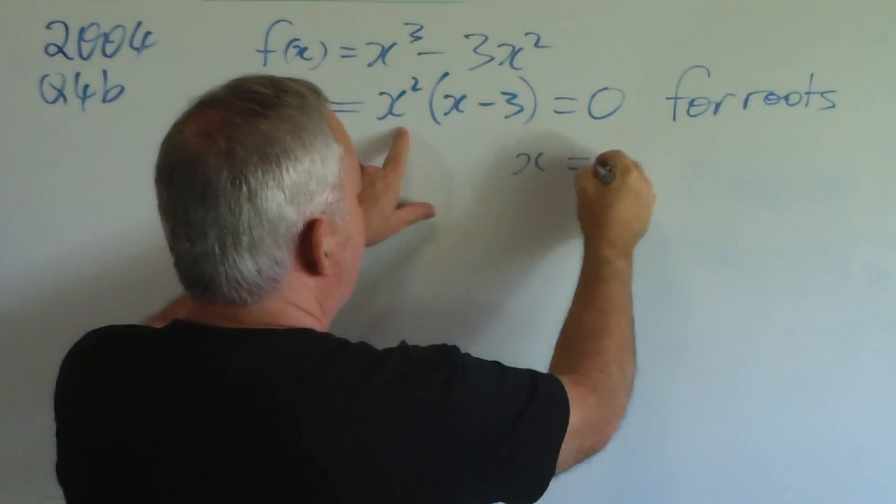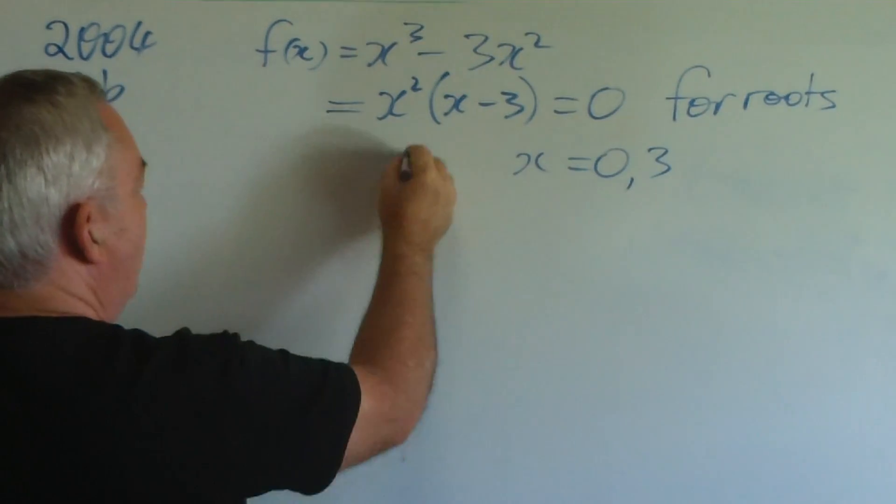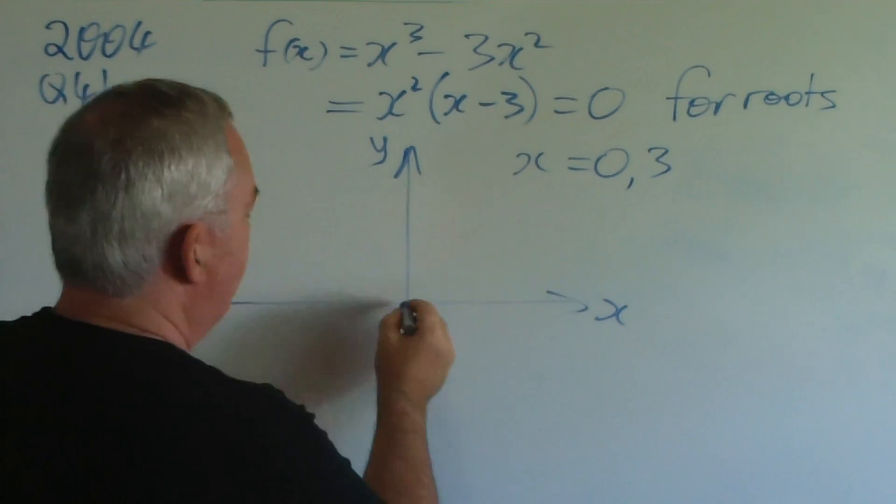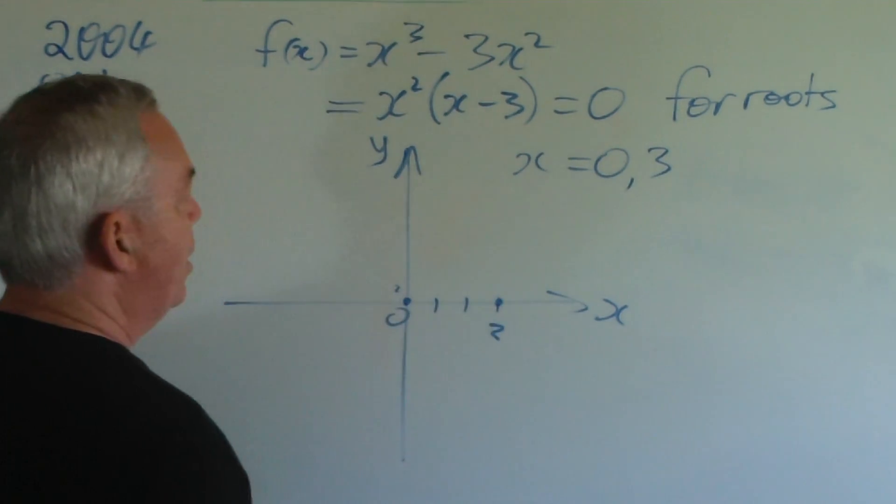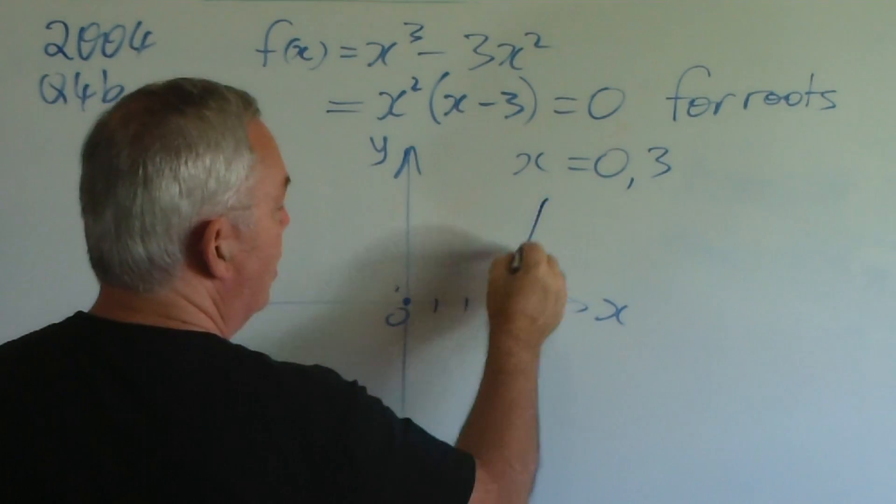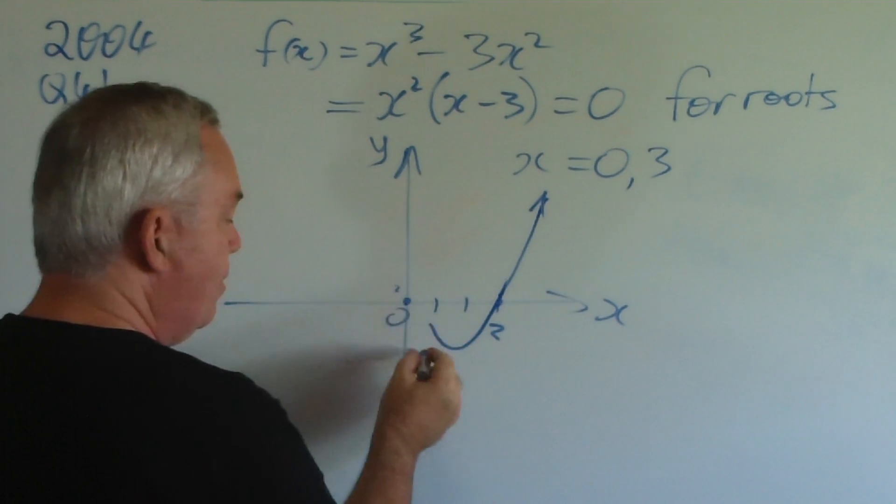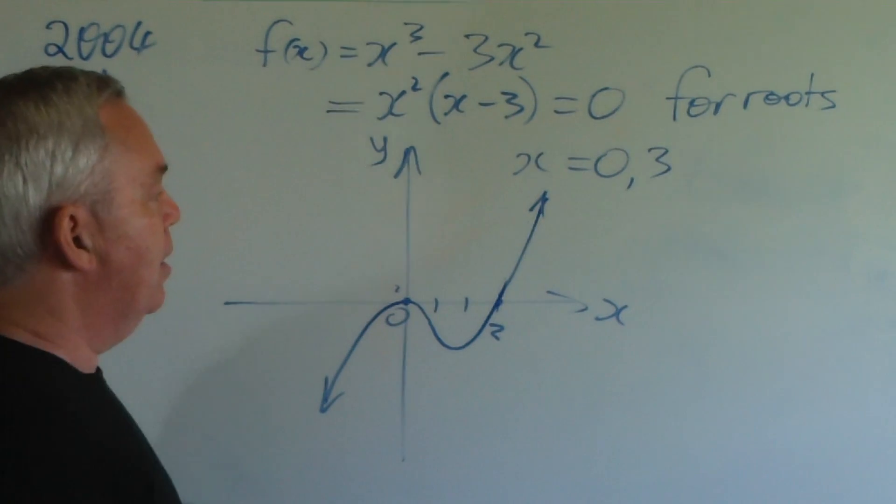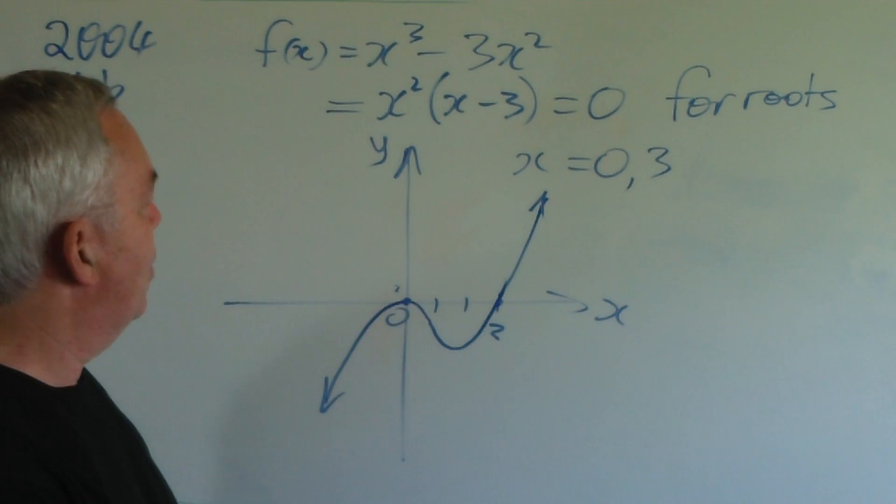And we have roots, therefore, at x equals zero, a double root, and at x equals three. Draw our axes. Root at zero, I'll put a little two to remind me it's a double root. Another root at three. The leading coefficient is positive, and one, so the graph is going up here. It passes straight through the two. As it comes up, because it's a double root, it behaves like an upside-down parabola. That's the sketch for the 2004 HSC question.